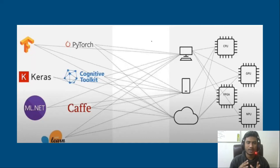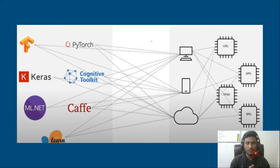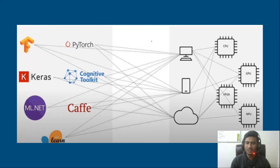So on one side you have all your frameworks, and on the other side you have all your hardware and software options. I think now you get the idea of what problems we face in deep learning and why ONNX comes into the picture. That was all for this video — let's meet in the next class with a new topic. Thank you.